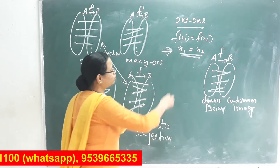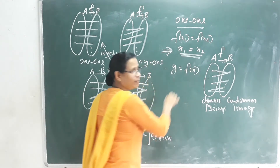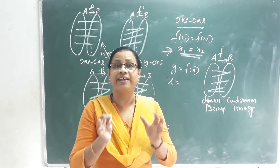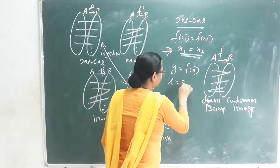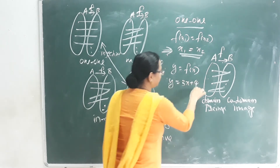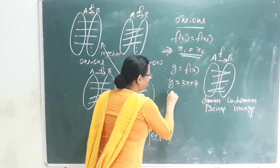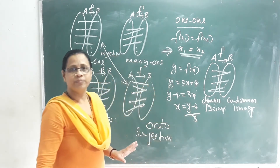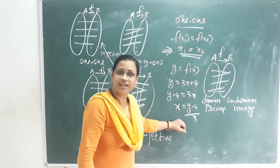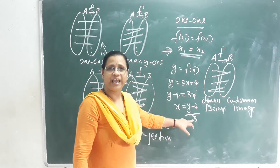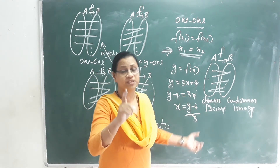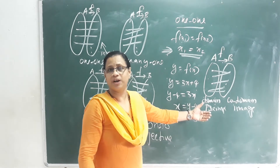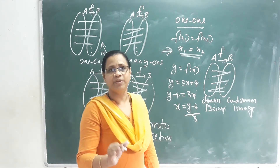To prove an Onto function, let y = f(x) and find x in terms of y. For example, if y = 3x + 4, then x = (y - 4)/3. If we can find a valid x for every y in the co-domain, then the function is onto. The answer confirms it is onto when x exists for every element of the co-domain.